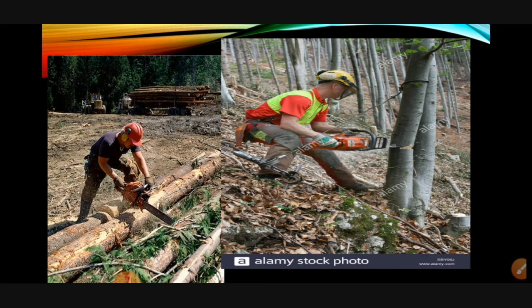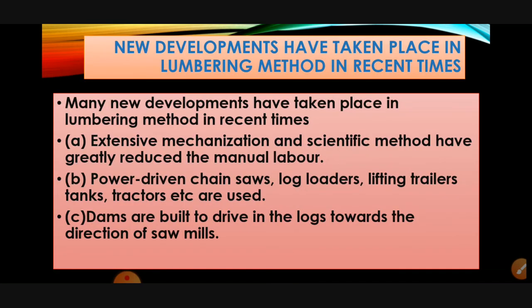You can see the machinery now used for cutting trees. Many new developments have taken place in lumbering methods. Extensive mechanization and scientific methods have greatly reduced manual labour. Earlier, manual labour was more and machines were fewer; now it is fully mechanized. Power-driven chainsaws, log loaders, lifting trailers, tractors, and tanks are used. Dams are built to drive the logs towards the sawmill. Most activity is now done by machines — power-driven saw chains, log lifters — all mechanized, with dams directing water towards the sawmill.